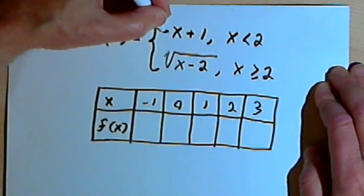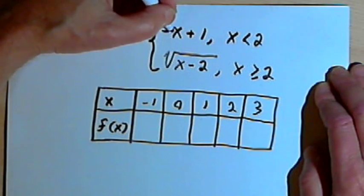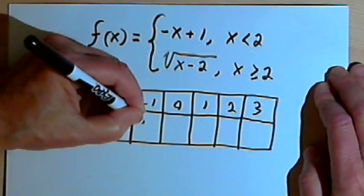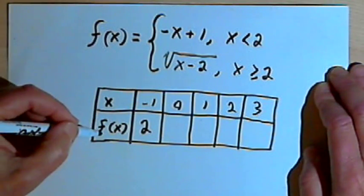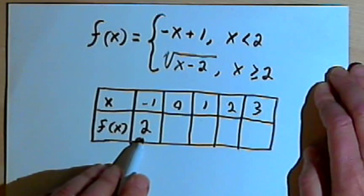So I want negative negative 1, that's positive 1, plus 1, so that's going to equal 2. So when x is negative 1, f or y is going to equal 2.